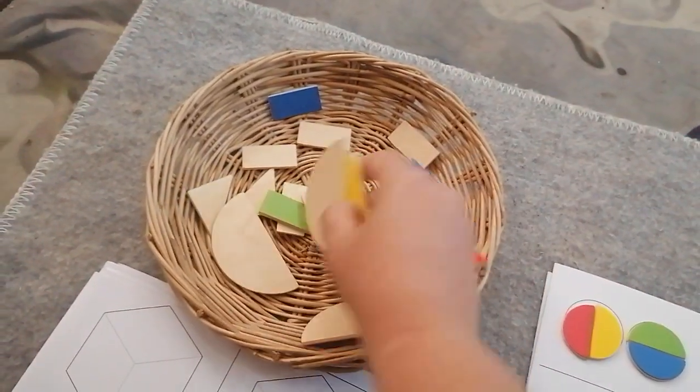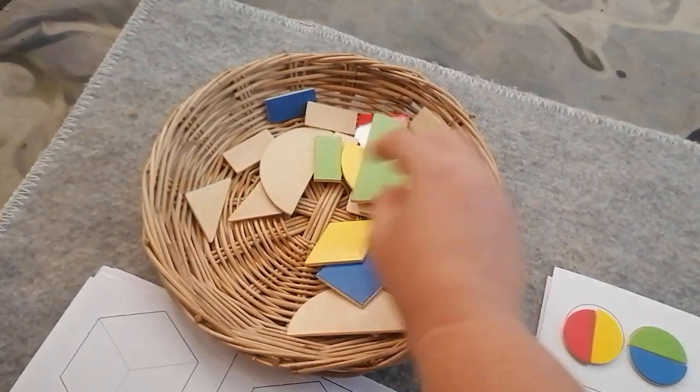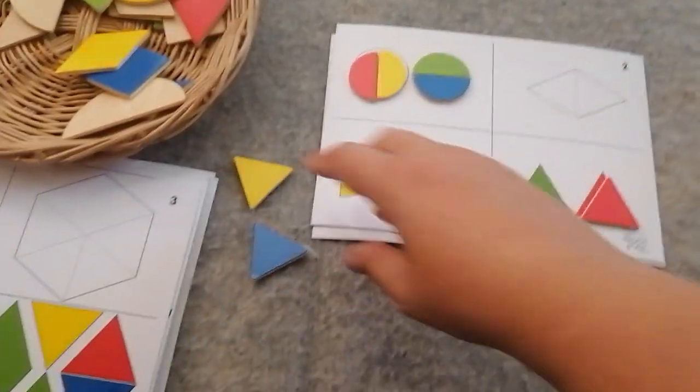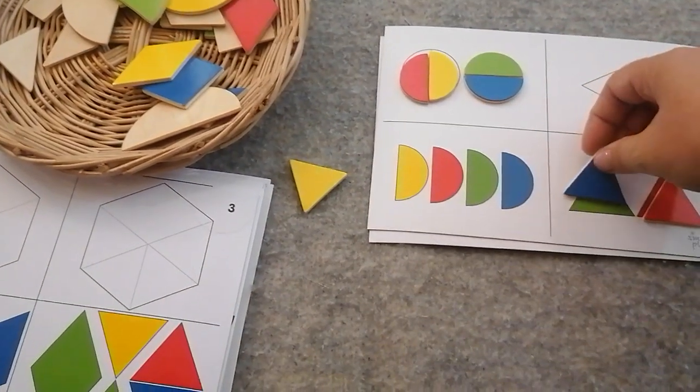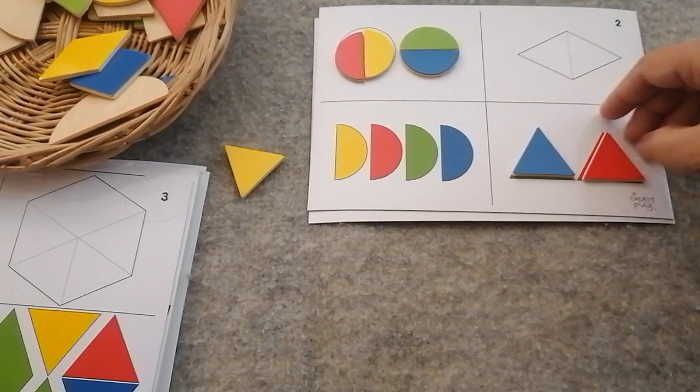And it looks like my green triangle is maybe missing. So I'm going to cheat and use the blue one instead of the green one. I'm going to substitute it, because sometimes things aren't perfect.